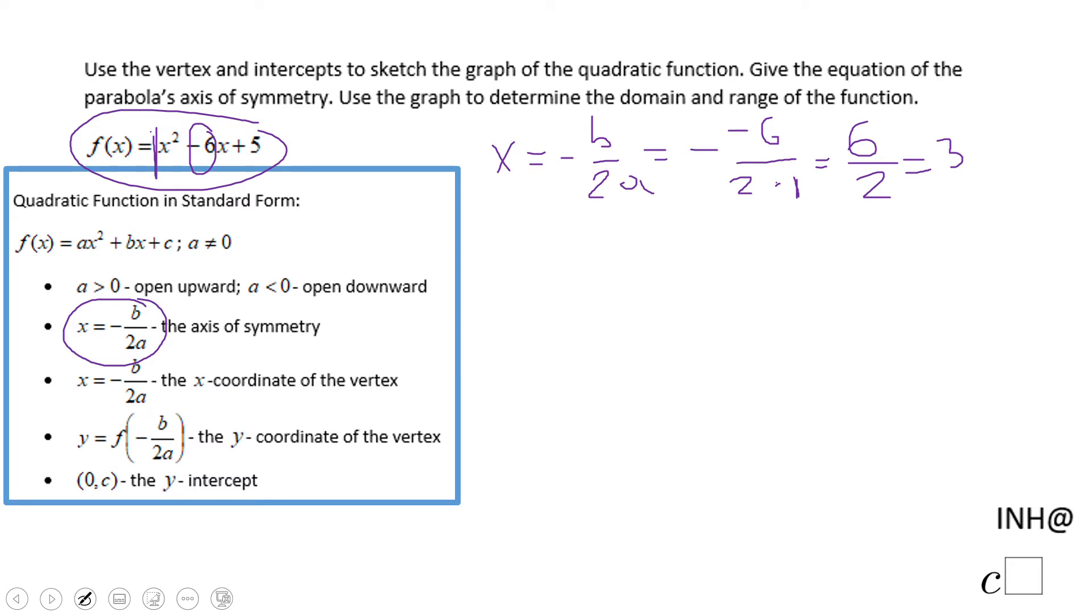Now do we find the y-coordinate of the vertex? We're going to plug this 3 in. We're going to have 3 squared minus 6 times 3 plus 5, that will be 9 minus 18 plus 5, which equals negative 4. So the vertex is 3 and negative 4.